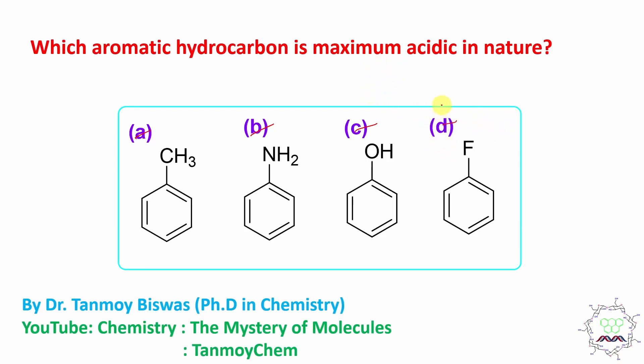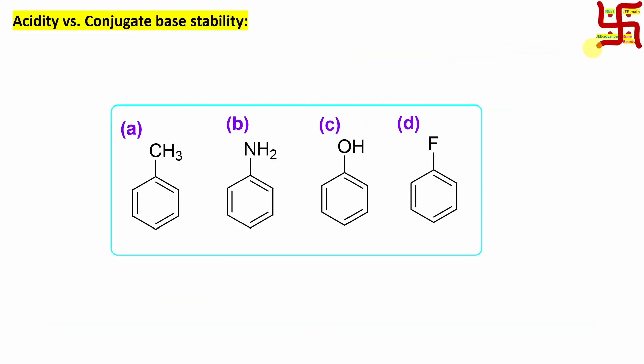I am asking about acidity, meaning proton releasing capability. Who can release proton maximum efficiently? If a molecule releases a proton, the remaining anionic part is called the conjugate base. More the stability of conjugate base, more is the acidity. So actually this acidity will be dependent on the stability of the conjugate base.